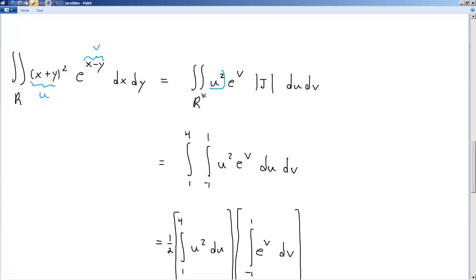So we've got u squared, e to the v, absolute value of the Jacobian, du dv, and this region is now the region of the transformed region, region star. And the bounds on that, the bounds on u is from negative 1 to 1, the bounds on v are from 1 to 4, and then u squared, e to the v.